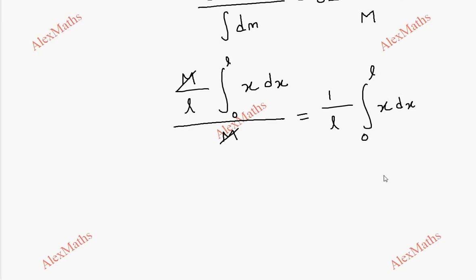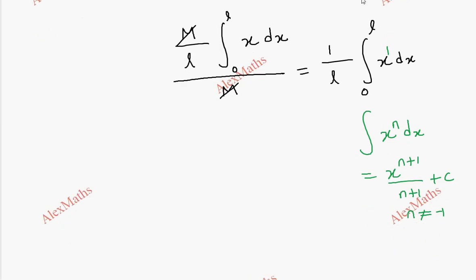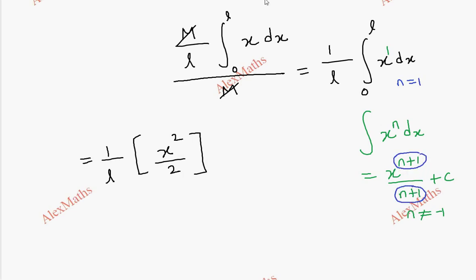Here we use the integration formula: the integral of x^n dx equals x^(n+1) divided by (n+1) plus C, valid when n is not equal to minus 1. Here x is x^1, so n equals 1, giving x^2 by 2, with limits 0 to L.